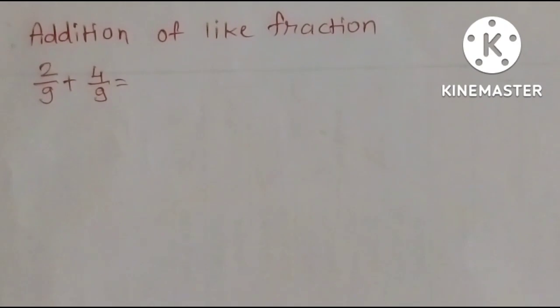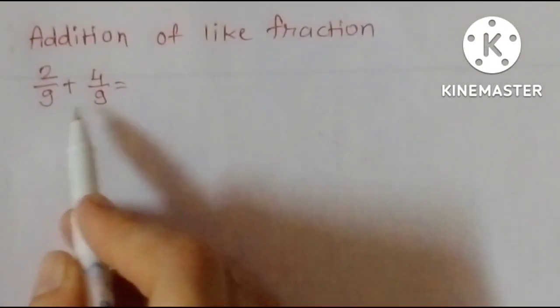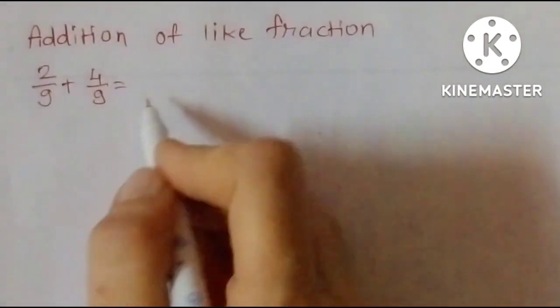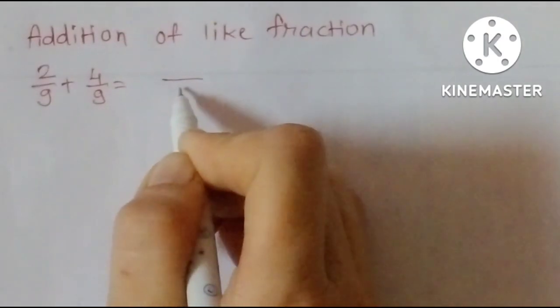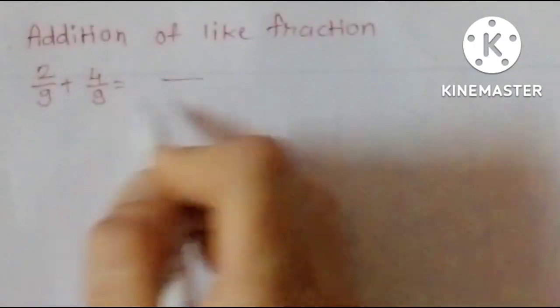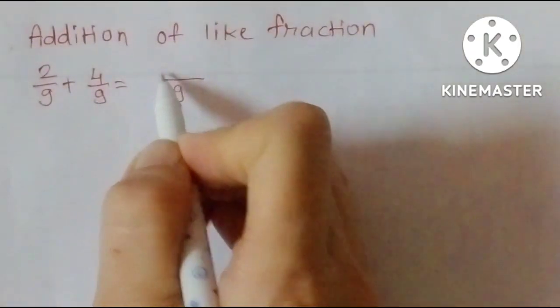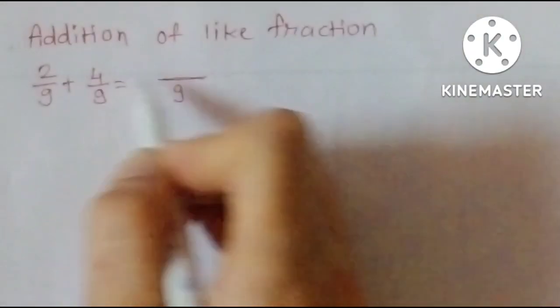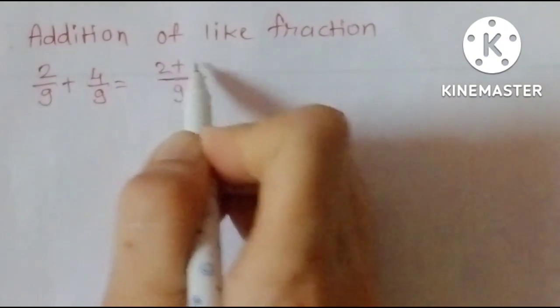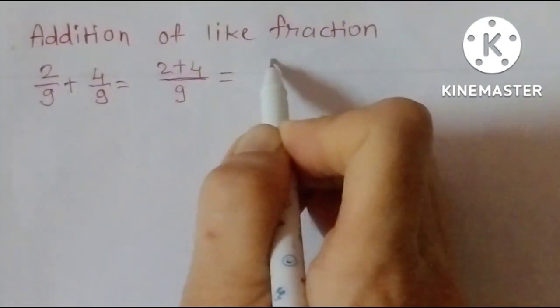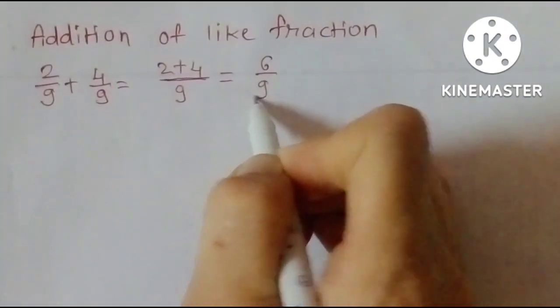Addition of like fractions: 2 upon 9 plus 4 upon 9. In like fractions, denominators are the same, which is 9. We are adding numerators: 2 plus 4 is equal to 6 upon 9.